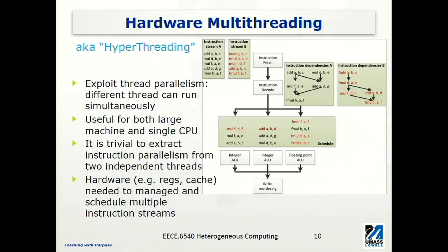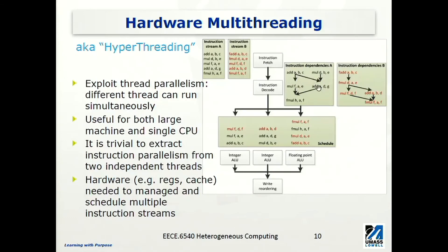Let's look at this example. We have two instruction streams — think of this as thread A and thread B — and each of them needs to execute a series of instructions. The processor, assuming it's a superscalar processor, will discover the dependencies among instructions within a thread, not across threads, because — for example — multiply DBE is independent from any of the instructions in the other stream. Some instructions, like ADD A, B, C and multiply DBE, can be executed together, but some cannot. But across these two streams, instructions can be executed together.